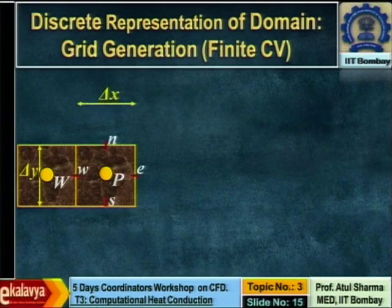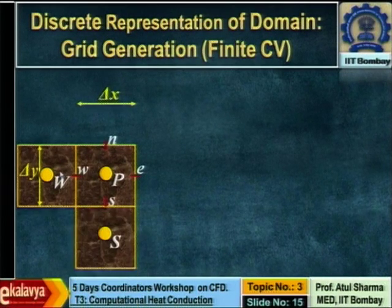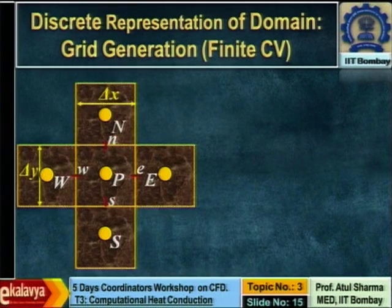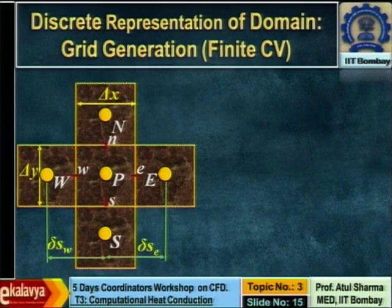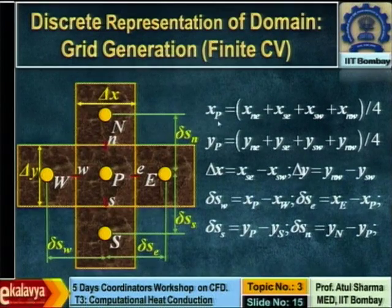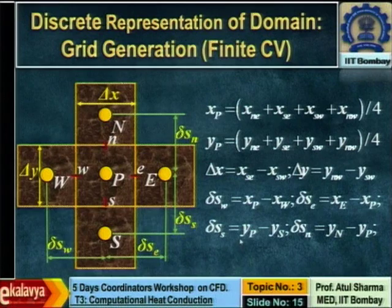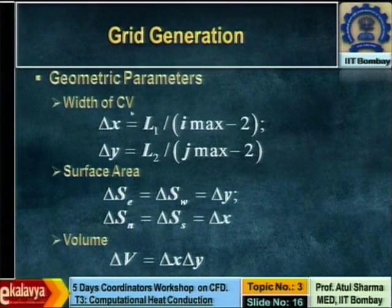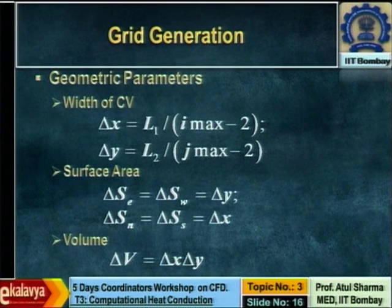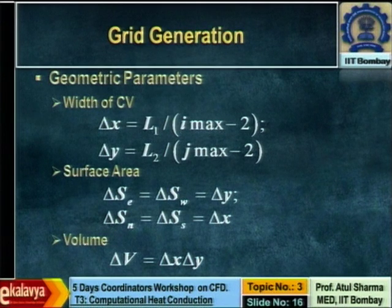Other than the width of the control volume, you also need the distance from a cell center to its neighbor, which is used in calculating the temperature gradient at the face center. Once you know the vertex coordinates from grid generation, you can obtain the cell center coordinates, the width of the control volume, and the distance between neighboring cell centers. The width, surface area, and volume can be calculated from these coordinates. These geometrical parameters appear as coefficients in the algebraic equation along with thermophysical properties.